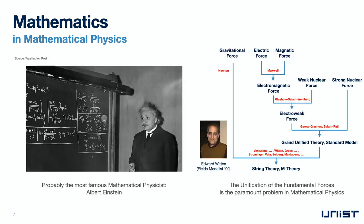At the intersection of mathematics and physics, there is mathematical physics. As you may all know, Albert Einstein is probably the most famous mathematical physicist. Since Einstein, mathematics for physics has provided tools to unify the laws of the fundamental forces of nature. Maxwell, for example, used mathematics over a century ago to unify the laws of electric force and magnetic force to give rise to electromagnetism.